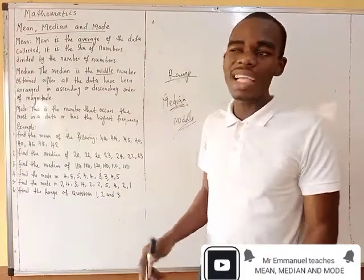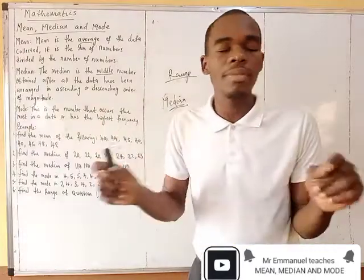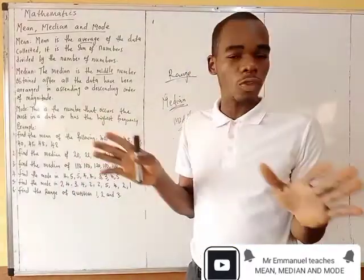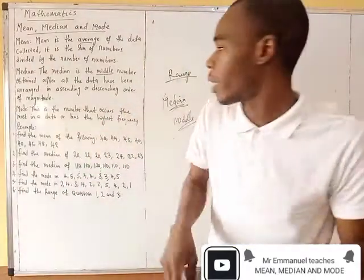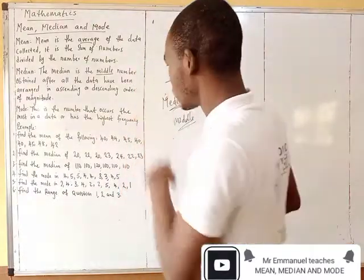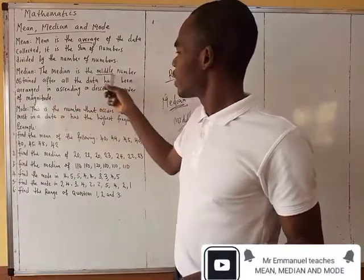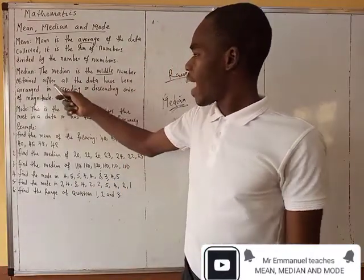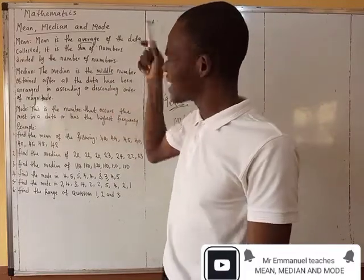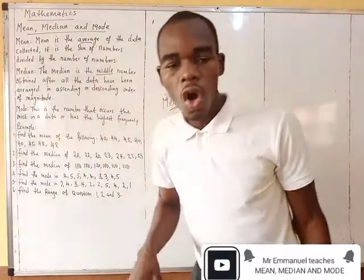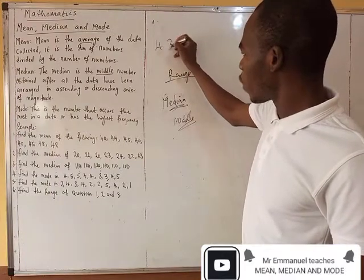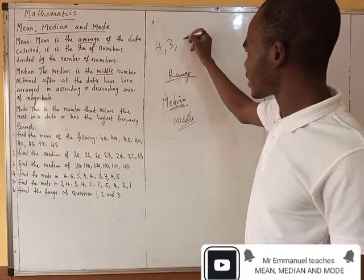It's that easy. So anytime you hear 'mid,' just remember it as median, because of that middle number. So let's proceed. The median is the middle number after all the data has been arranged in ascending or descending order.